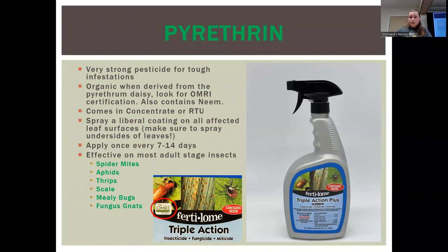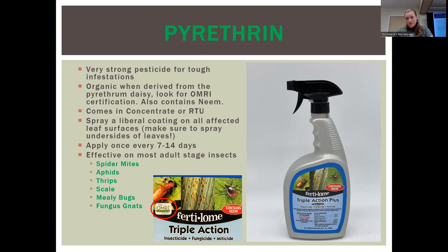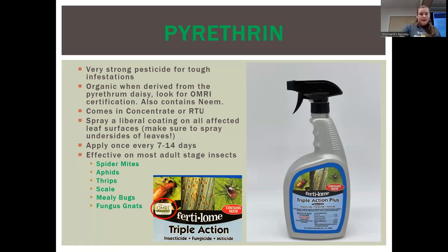Pyrethrin: the concentrated pyrethrin is technically OMRI certified organic. The ready-to-use has a non-essential ingredient that isn't technically organic, so if you're looking for organic make sure to get the concentrate and mix it yourself. It's derived from a pyrethrin daisy. It's a little more effective than neem — if you have a worse pest problem and need to do something fast and effective right now, go straight to the pyrethrin. Apply once every 14 days, making sure to cover all affected surfaces including undersides of leaves. It takes care of spider mites, aphids, thrips, scale, mealybugs, and fungus gnats.